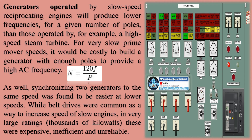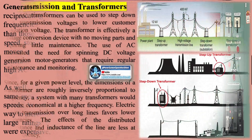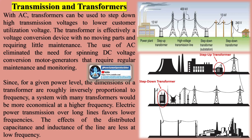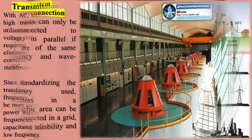While belt drives were common as a way to increase speed of slow engines, in very large ratings of thousands of kW these were expensive, inefficient, and unreliable. With AC, transformers can be used to step down high transmission voltages to lower customer utilization voltage. The transformer is effectively a voltage conversion device with no moving parts and requiring little maintenance. The use of AC eliminated the need for spinning DC voltage conversion motor generators that require regular maintenance and monitoring. Since, for a given power level, the dimensions of a transformer are roughly inversely proportional to frequency, a system with many transformers would be more economical at a higher frequency.